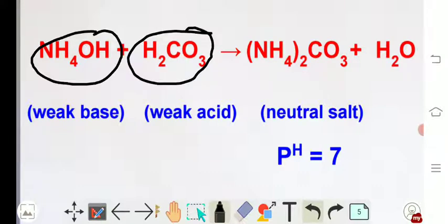When ammonium hydroxide reacts with carbonic acid then it gives neutral salt ammonium carbonate (NH4)2CO3 and water.